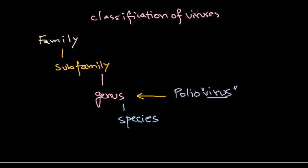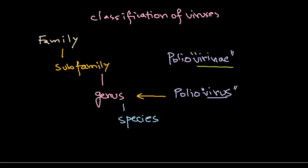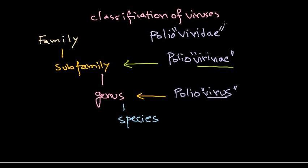When many virus genera combine together, we call them 'virini'. So 'polio virini' would be an example. When you see 'virini' at the end of the name, it means we are talking about the sub-family level. Combining more sub-families gives us a family, and the family level uses the suffix 'viridae'. So 'polio viridae' would represent the family.